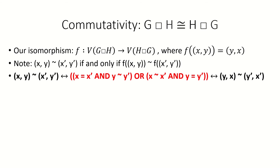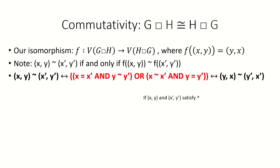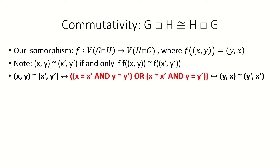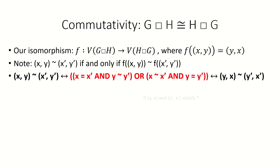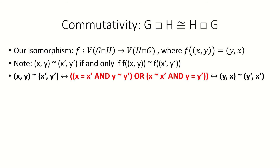Essentially, this is because any adjacent pair of vertices xy and x prime y prime in gh satisfy either the first or second adjacency condition. If they satisfy the first adjacency condition, then their images under f in hg satisfy the second adjacency condition. And if they satisfy the second adjacency condition, then their images under f in hg satisfy the first adjacency condition. We can also say the same thing about a pair of vertices in hg and their inverse images in gh. Together, this shows that f is an isomorphism.